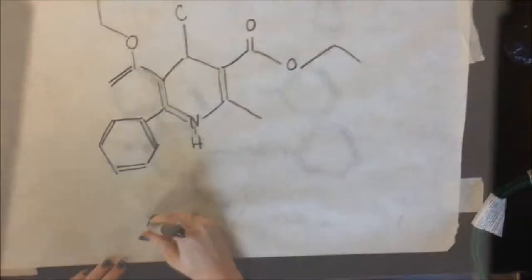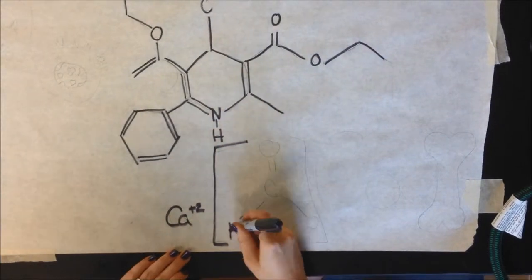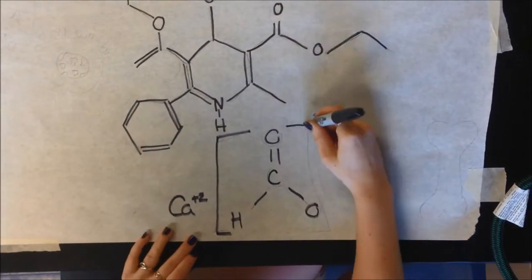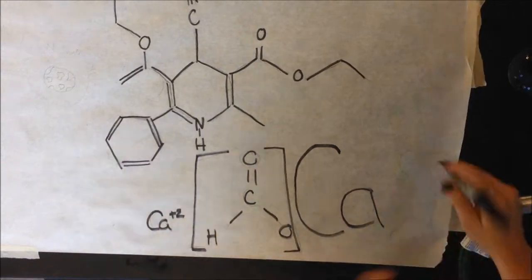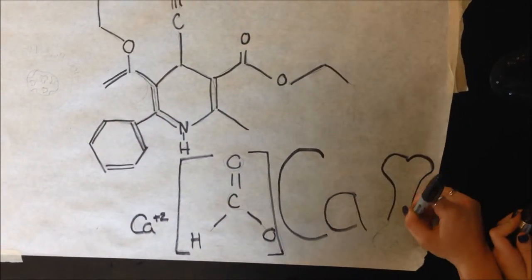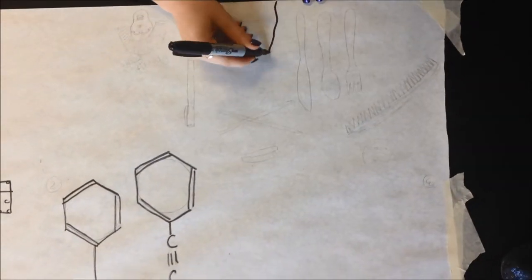That might sound a bit fancy, but a micelle is simply a lipid molecule that forms a sphere in aqueous solutions, which makes that all a little more clear. The formula, as you can see, is massive. It's C31H27NO4.